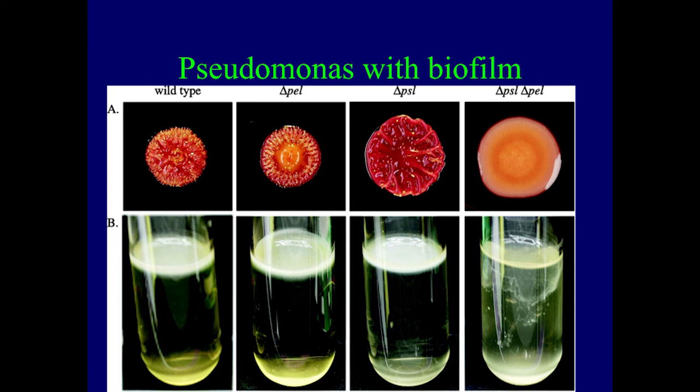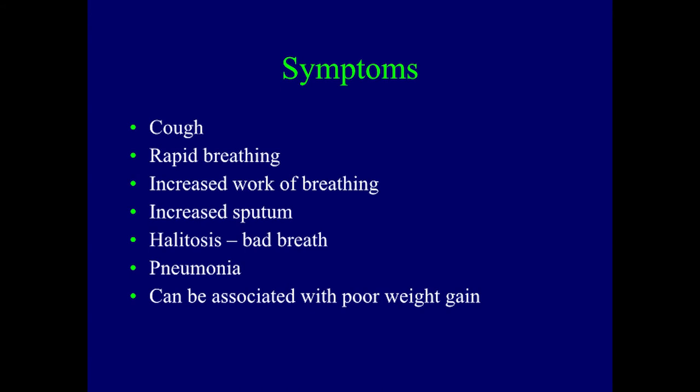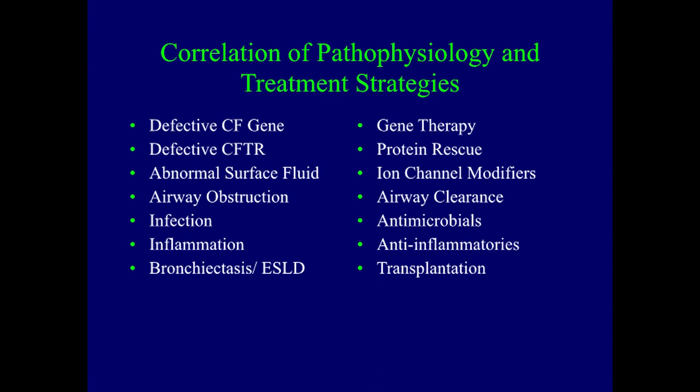What symptoms are these kinds of infections going to cause? Like all respiratory tract infections in cystic fibrosis, you'll see coughing, increased respiratory rate, increased work of breathing, and increased sputum production as your body tries to fight off these organisms. You get halitosis or bad breath, and there is the particular Pseudomonas odor mentioned before. You can get pneumonia from this infection, and it can be associated with poor weight gain.